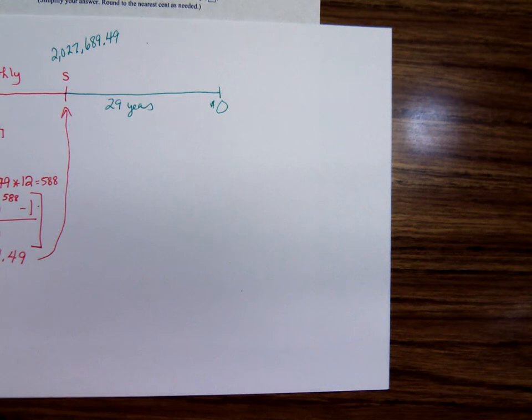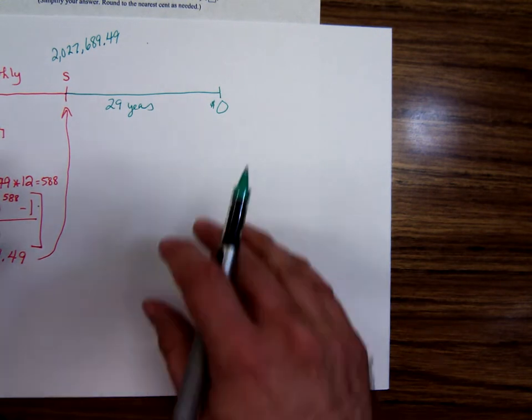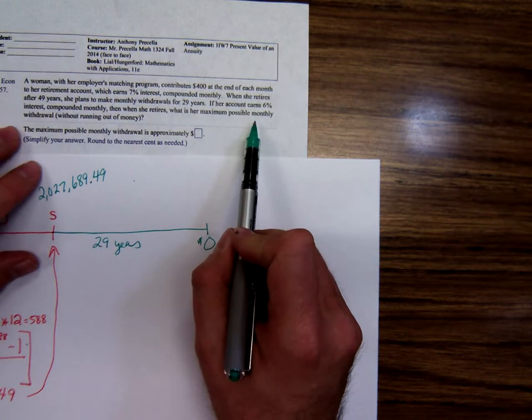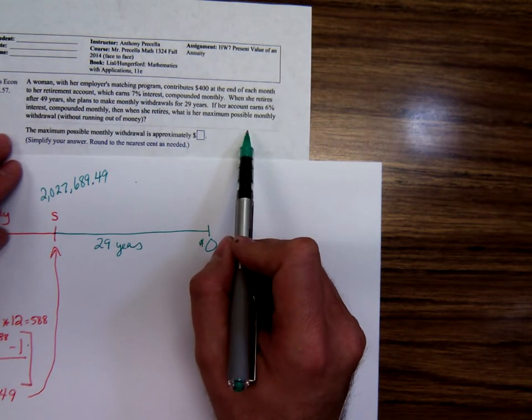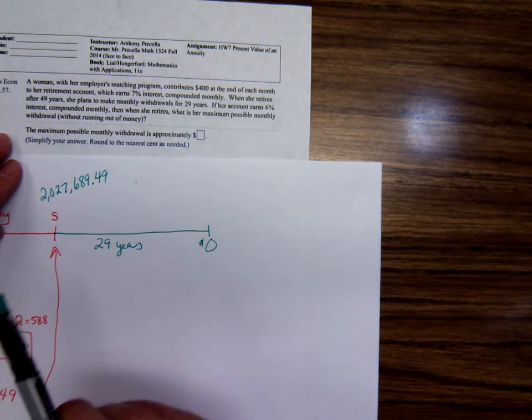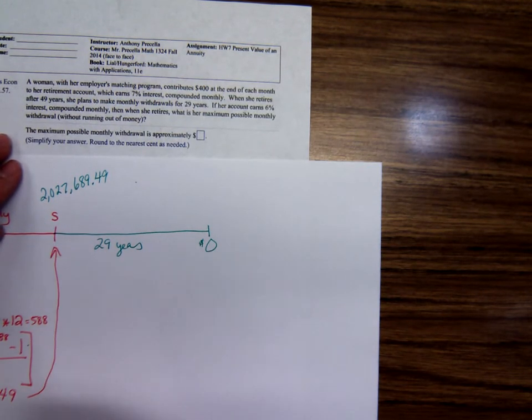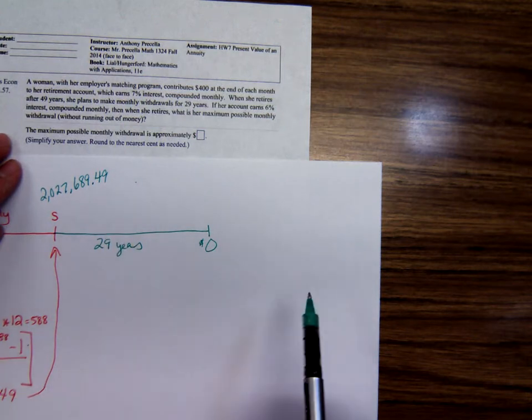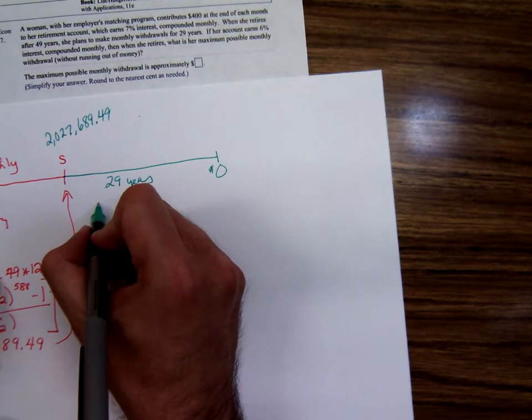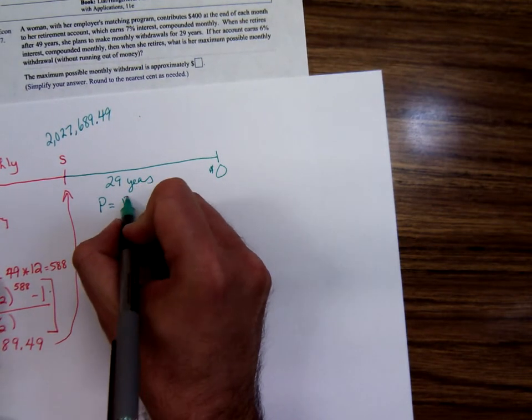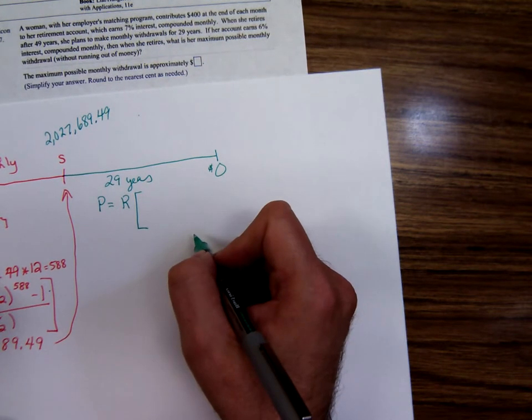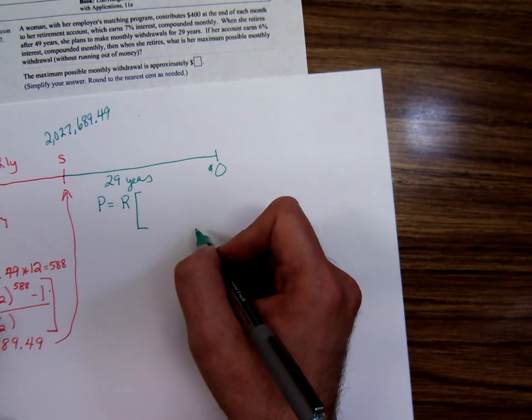Doesn't the word problem say something about her not running out of money? To solve it? She doesn't want to run out before the 29 years. Which is a way of saying she's going to have zero at the end. They want you to say, it also says, what's the maximum amount? What's your maximum possible monthly withdrawal? They don't want you to say, well, if she only takes out $1 a month, she won't run out of money. They want to know the largest amount she can take out and still not run out until the 29 years is over. So this is a present value.